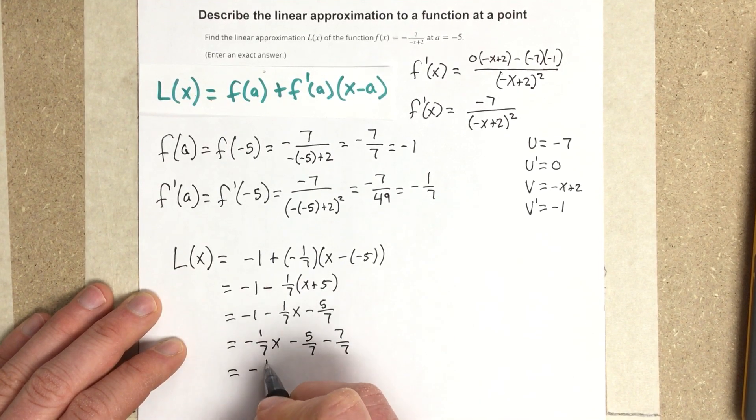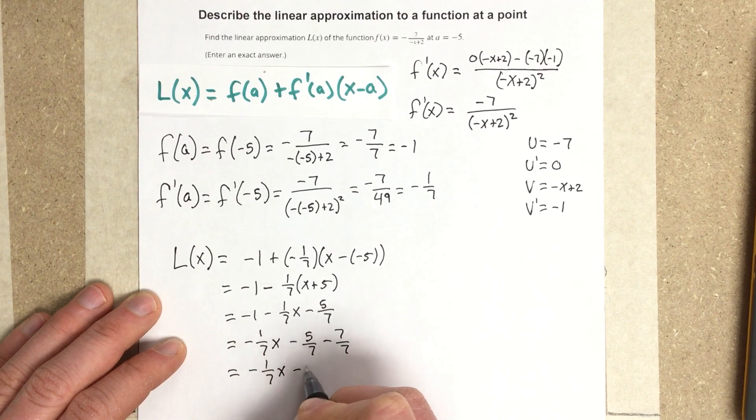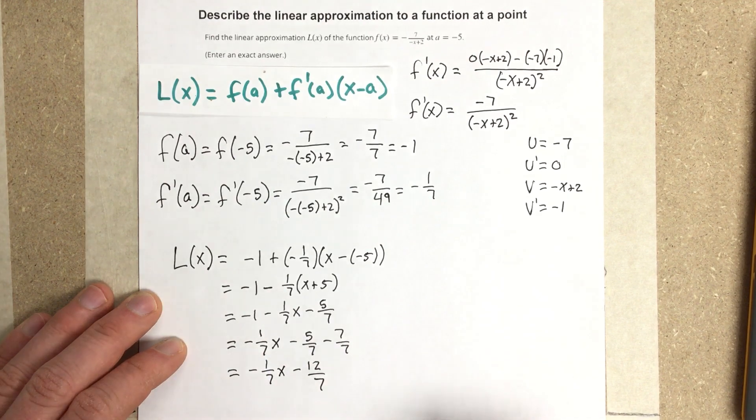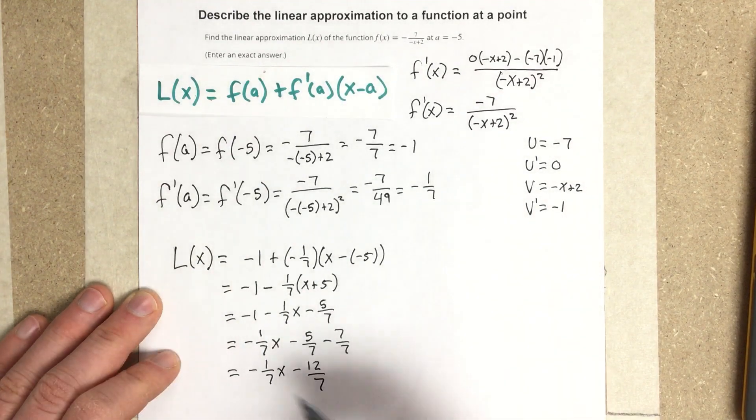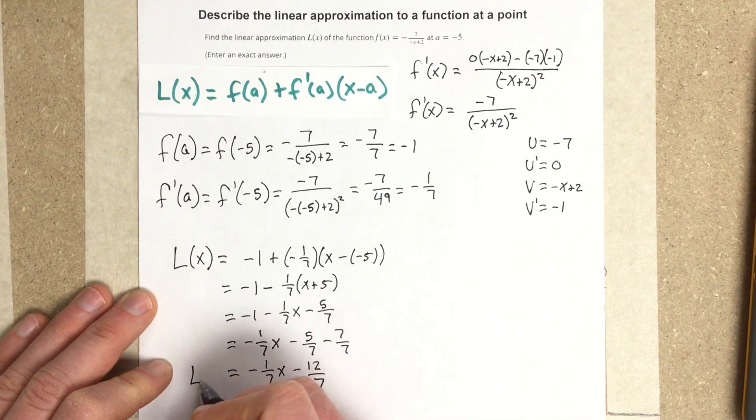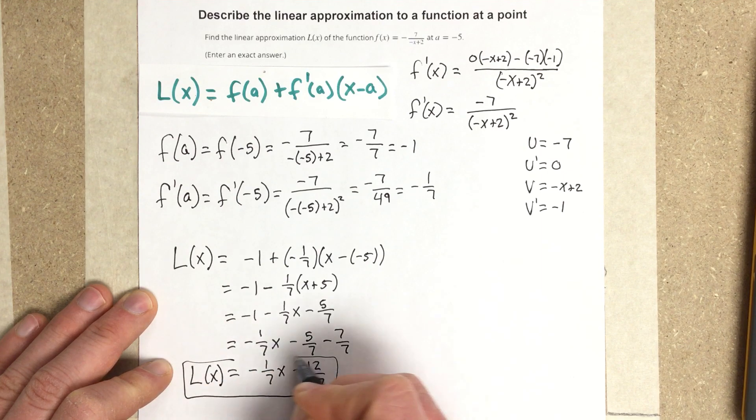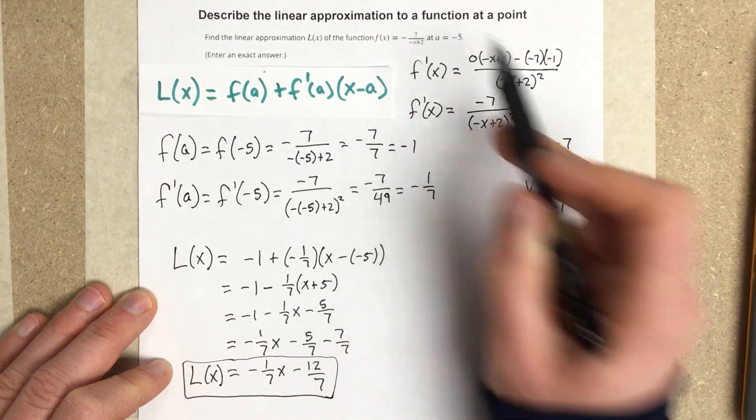So I end up with negative 1 seventh X minus 12 over 7, which is the equation for our linearization. So this is the equation for the linearization at A equals negative 5 for that function.